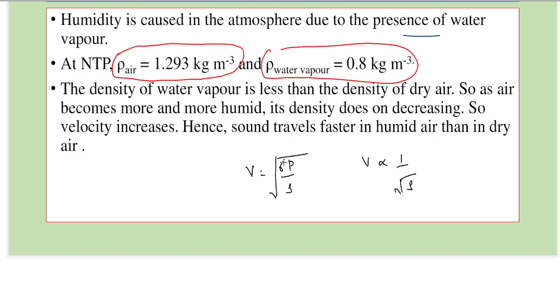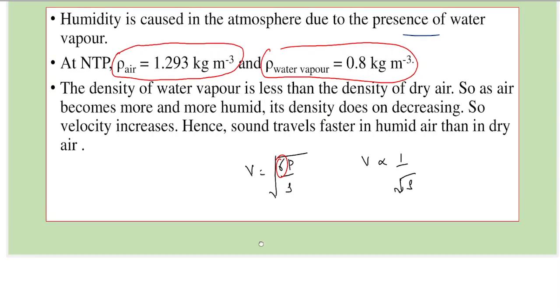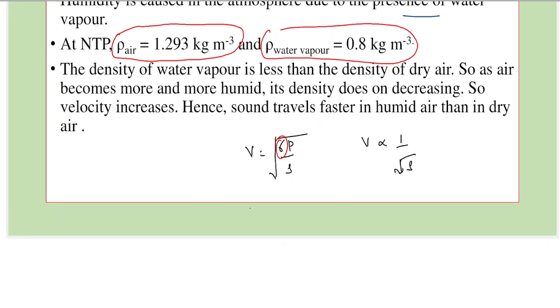Gamma depends on the gas constituents, not the amount of moisture or temperature. V goes inversely as the root of rho. Since dry air has a high density, it means that velocity of sound in dry air would be less than velocity in the presence of moisture.